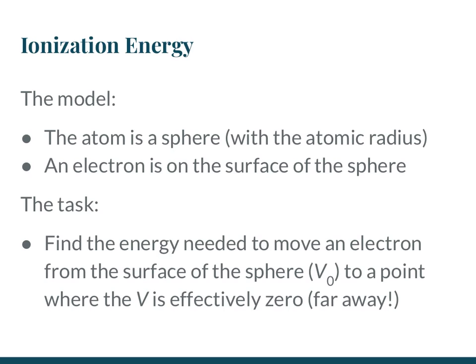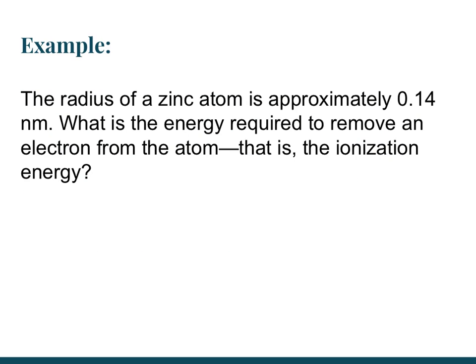Next up we have ionization energy, which basically uses the same concept we were just working on. The model is of an atom which we consider as a sphere, and the radius of that sphere is equal to the radius of the atom. An electron is on the surface of that sphere, and we need to find the amount of energy required to move that electron from the surface to a point where the potential is basically zero — infinitely far away. The best way to learn ionization energy is just to do it, so we'll use a zinc atom example.